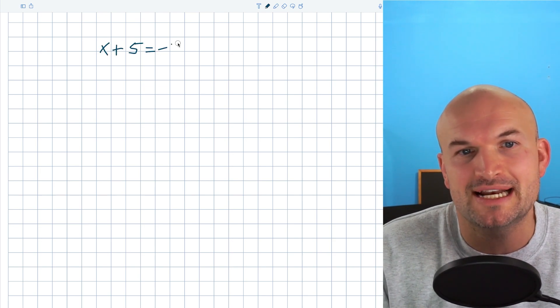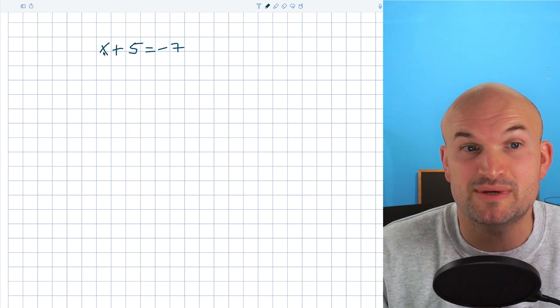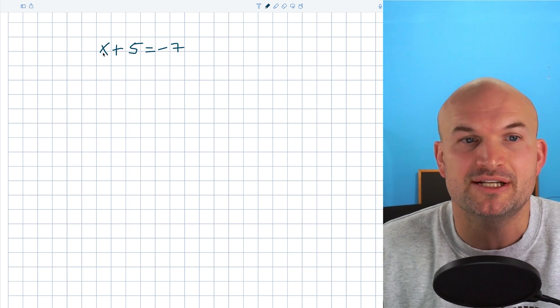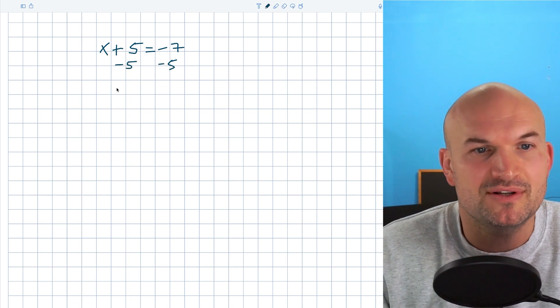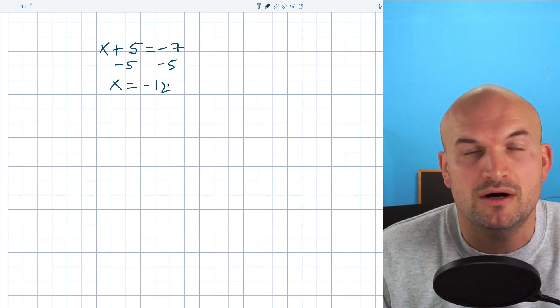So let's say we had x plus 5 equals negative 7. Remember to solve for x, we isolated, we undid what was happening to the x. So we would subtract 5 on both sides and we get x equals negative 12.